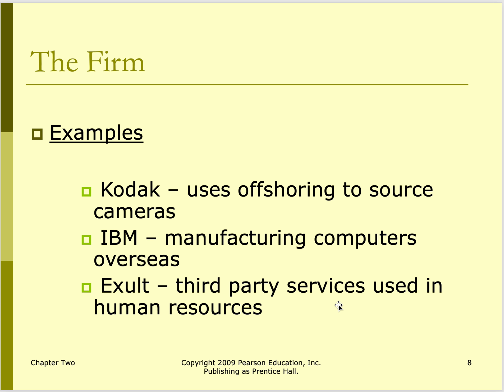Kodak is cited in the book as using offshoring to source cameras, but they did such a horrible job — whether they made cameras themselves or had Japan or China make them — that they're actually out of business. IBM sold their computer business to a Chinese company. Exalt is mentioned as a third-party service used in human resources — there are probably a lot of services like that now.